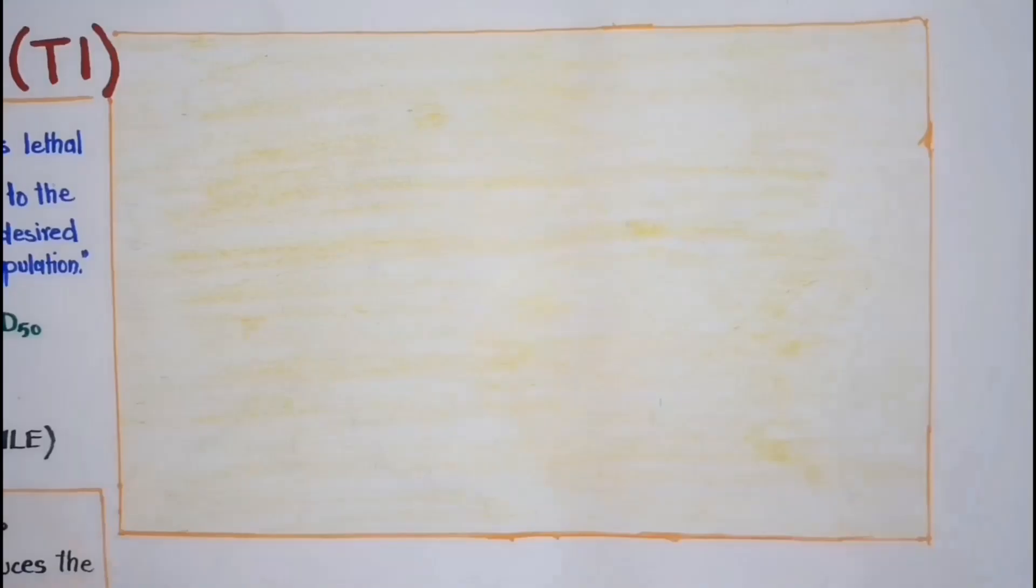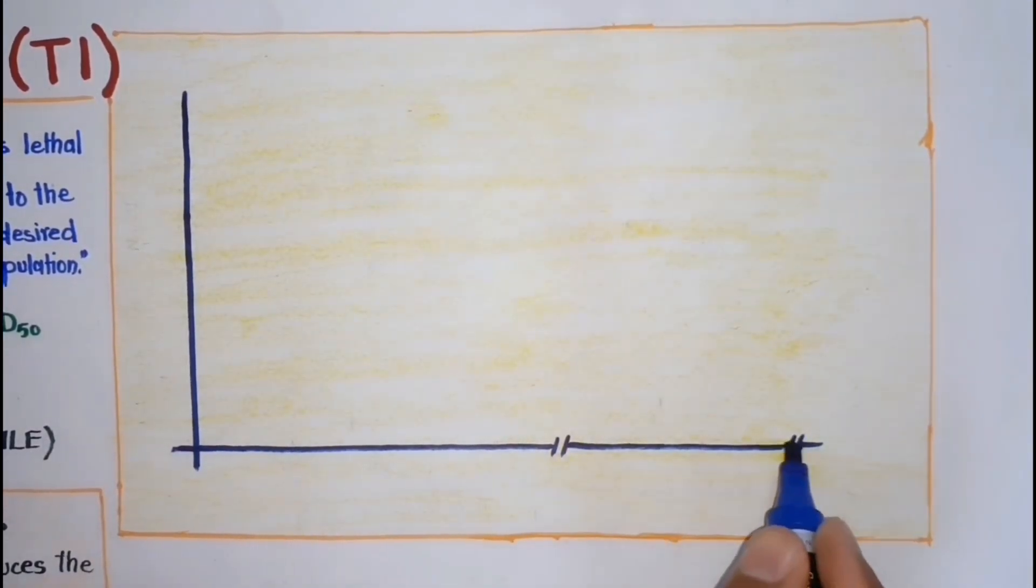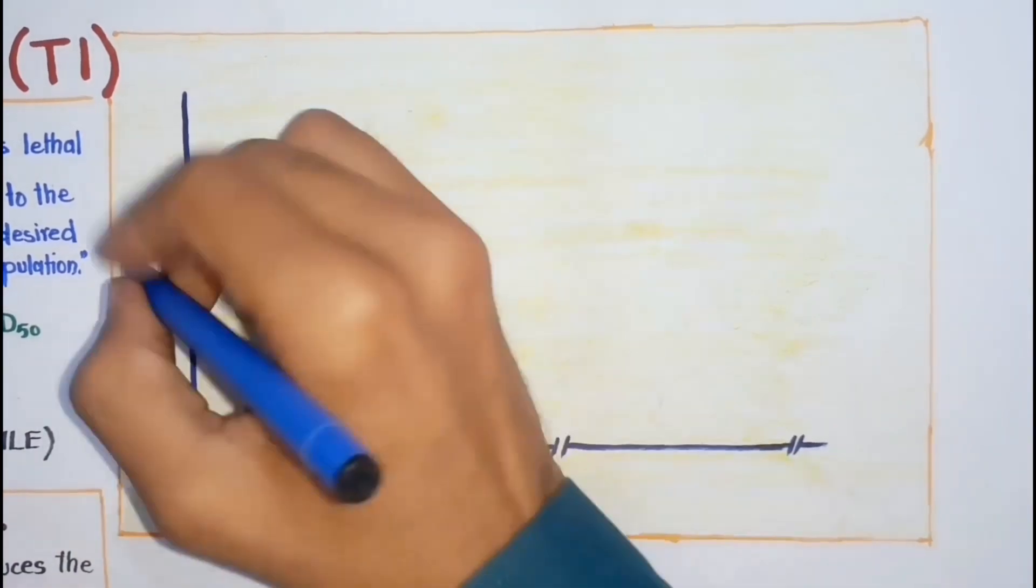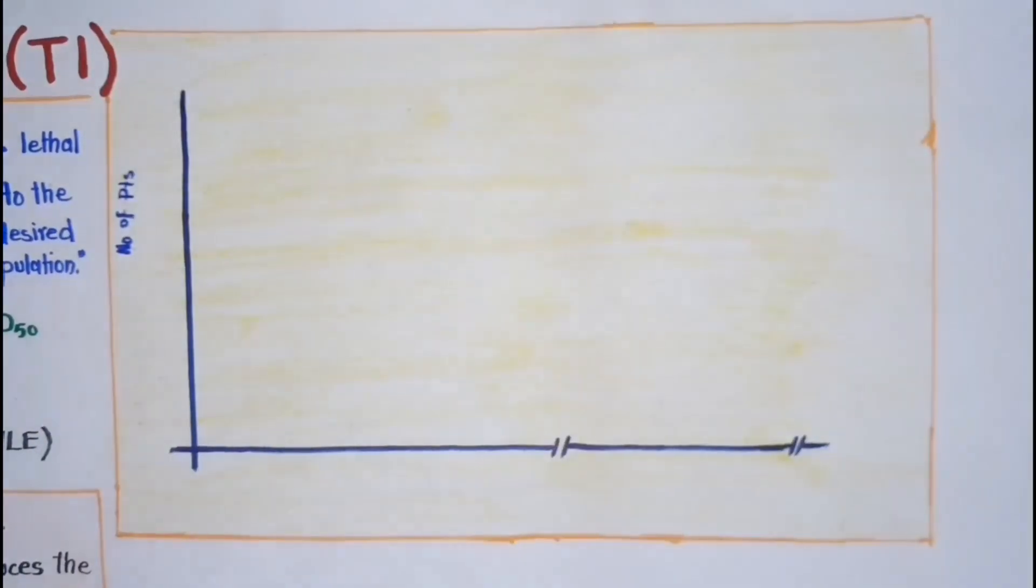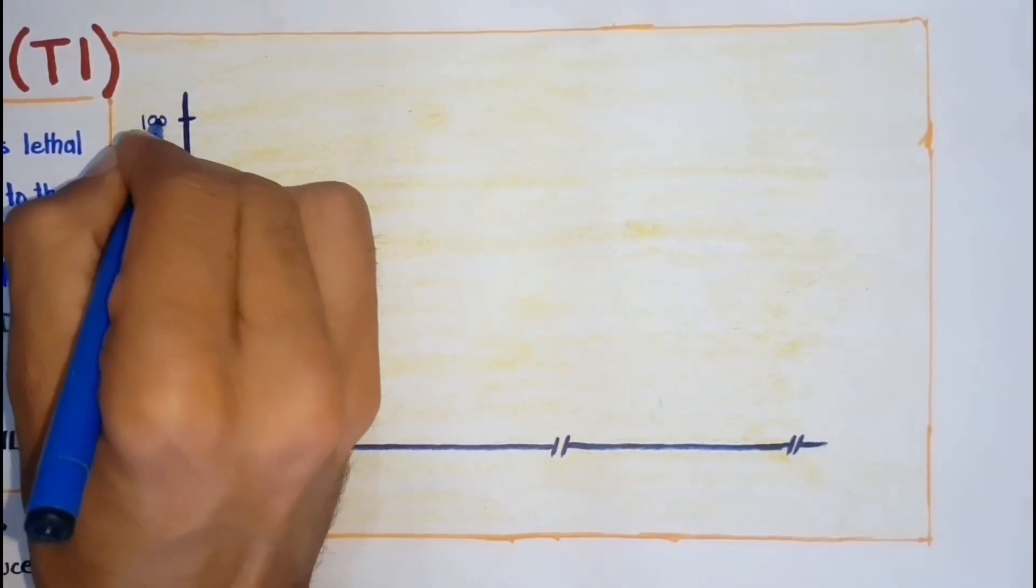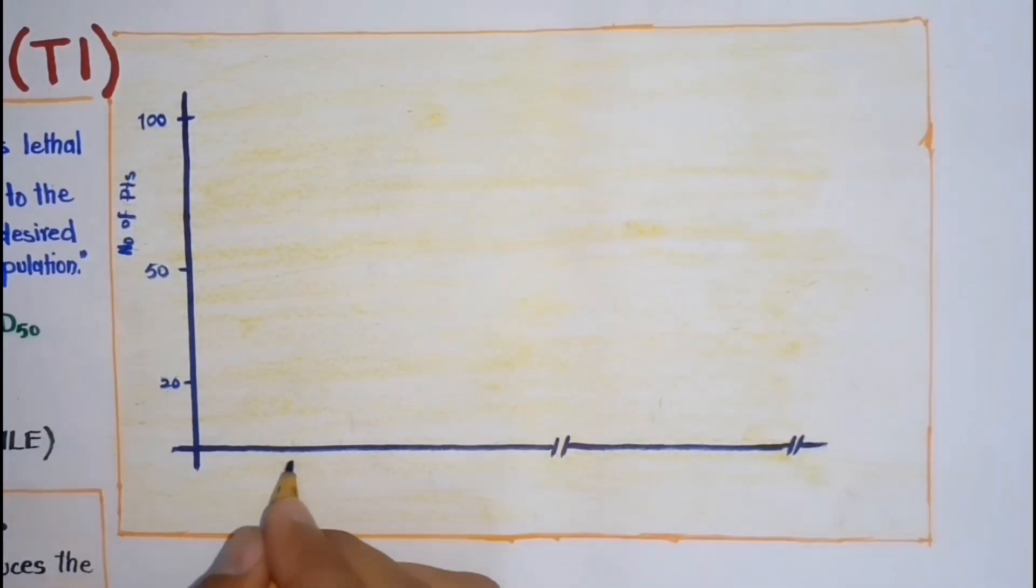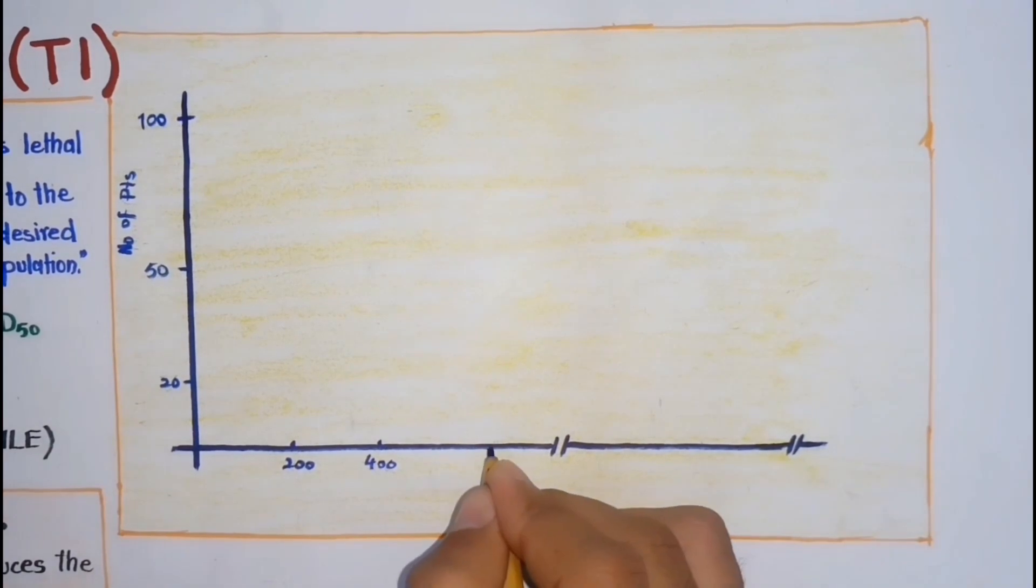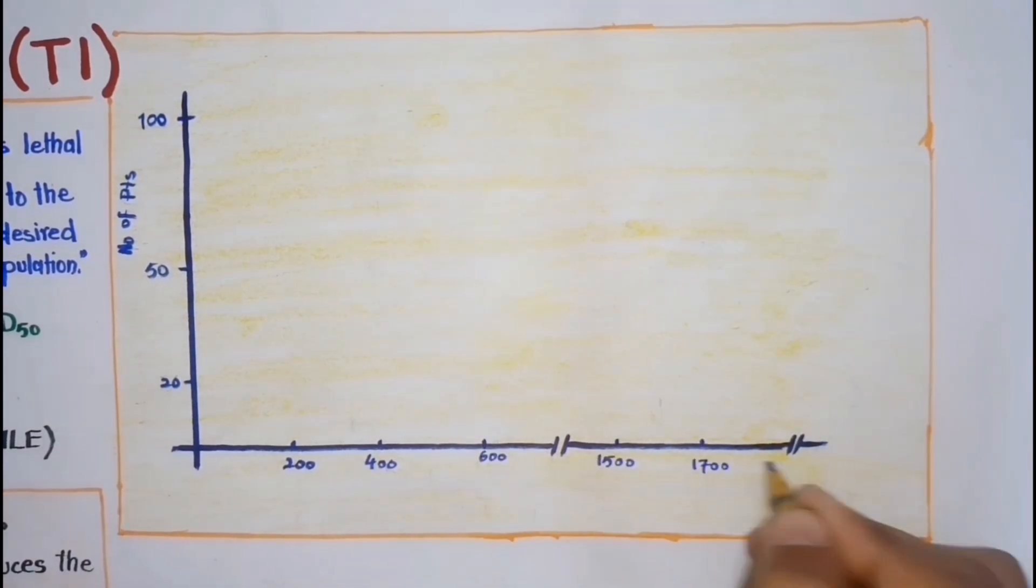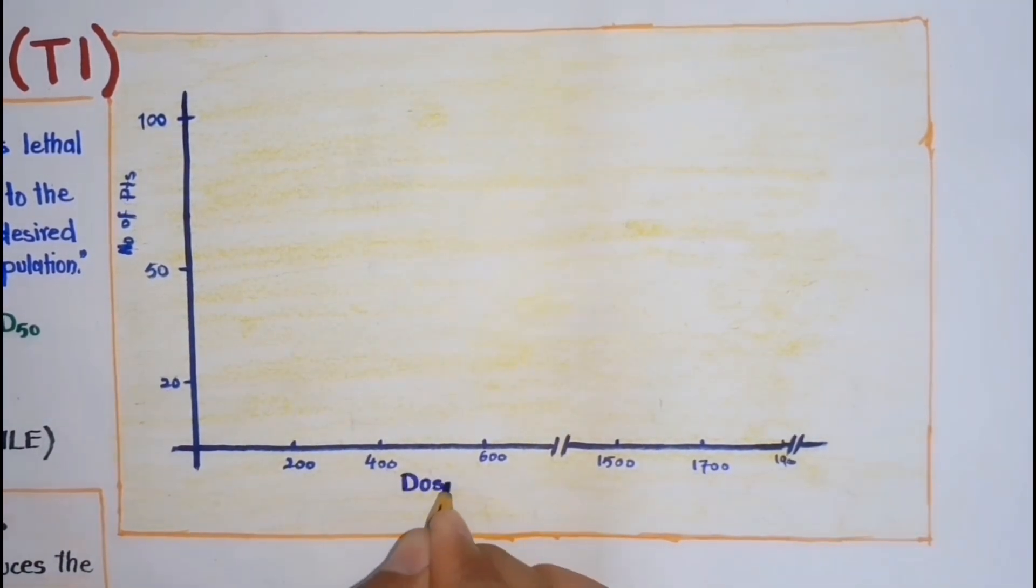For more understanding, here I am drawing a graph. On the y-axis we have the number of patients, for example 100 here. And on the x-axis we have the dose in mg per kg of the drug.